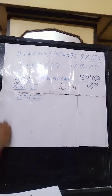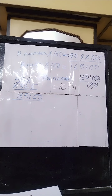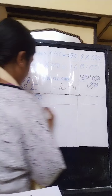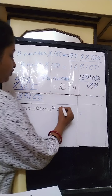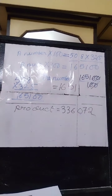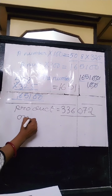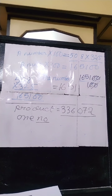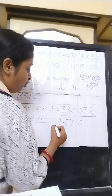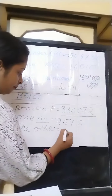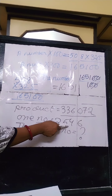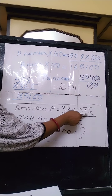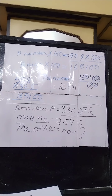Very quickly we will do the last sum, which is very important. The product of two numbers is given as 336072. One number is given to you — that is 2546. How will you find out the other number? Simply by dividing the product by the known number: 336072 divided by 2546. Do this division to find out the other number.